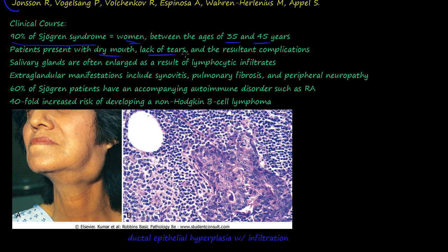Patients present with dry mouth, lack of tears, and the resulting complications: cavities and destruction of the eye surface. The salivary glands are often enlarged, as can be seen in affected patients due to lymphocytic infiltrates. Histologically, there is ductal epithelial hyperplasia with lymphocytic cell infiltration into the area.